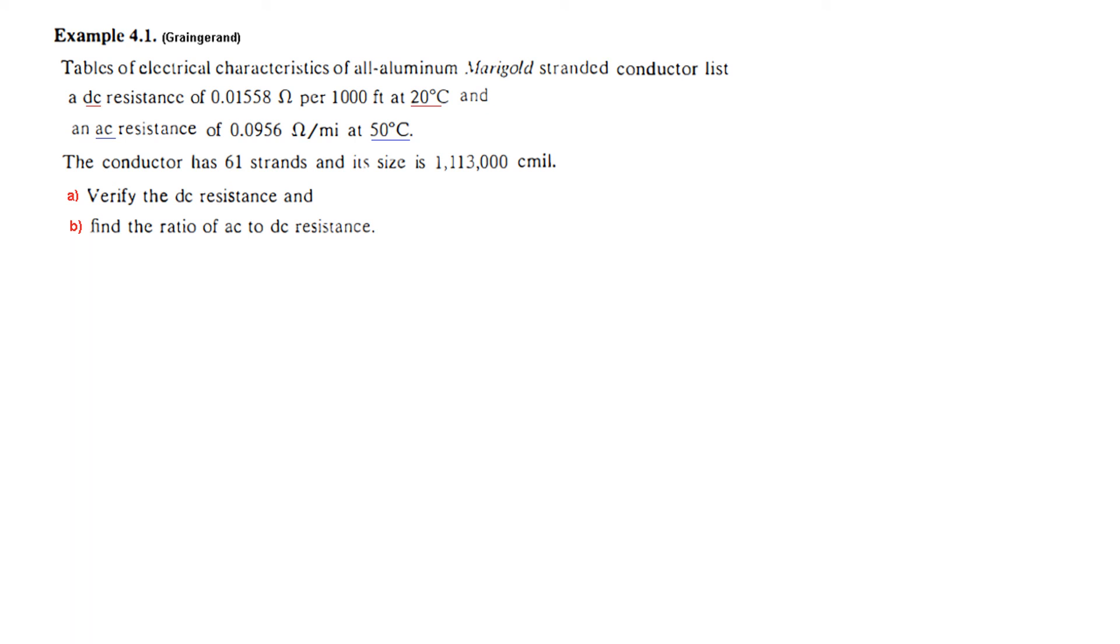Now we come to the second part of the question - we have to find the ratio of AC to DC resistance. Note that since AC resistance is given for 50 degree centigrade and per mile, for making a comparison we have to calculate the DC resistance at 50 degree centigrade and also per mile.